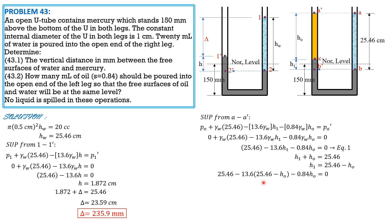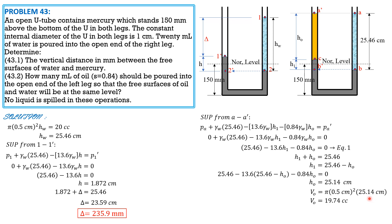Solving: h_o = 25.46 / (13.6 − 0.84) × (13.6 − 1) giving h_o ≈ 25.14 cm. The volume of oil required so that the free surfaces of oil and water are at the same level is V = π r² × h_o = π(0.5)² × 25.14 ≈ 19.74 cm³, which is 19.74 mL.